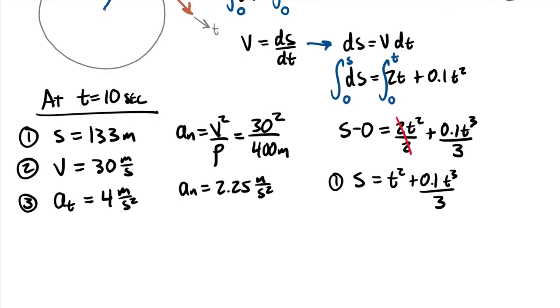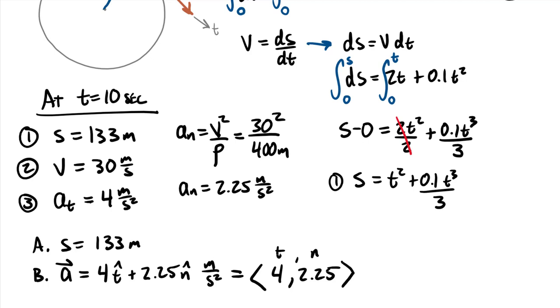So to bring this into kind of more of an answer format, we could say for part a, the distance traveled s is equal to 133 meters. And for part b, we can say that our acceleration vector could write it two different ways. One of those would be using unit vectors. So call this 4 in the t hat plus 2.25 in the n hat. And that's going to be in meters per second squared. Or using hard brackets, we could add a little notation above just to make sure everybody knows which term is which. And then meters per second squared. So that would be the answer to this example.